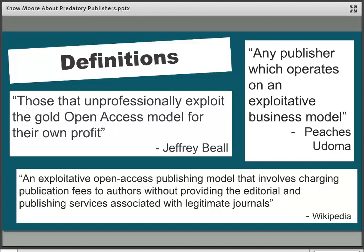Moving on to the next definition, it's from someone called Peaches Udoma, who is connected to the Open Access Week movement — a week-long celebration of open access which takes place every October. She terms these publishers as those which operate on an exploitative business model. The final definition from Wikipedia follows along similar lines: an exploitative open access publishing model that involves charging fees to authors without providing any of the services associated with legitimate journals. The word exploit keeps coming up in these definitions, and that's not a coincidence.